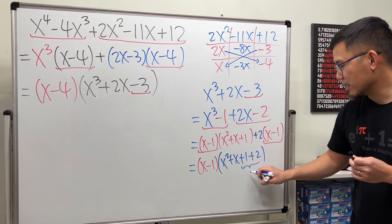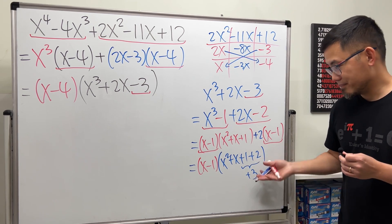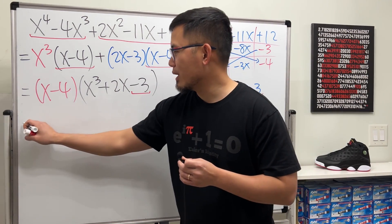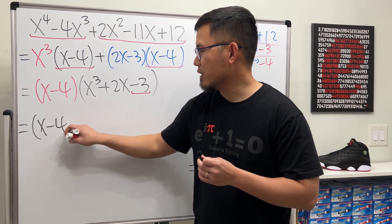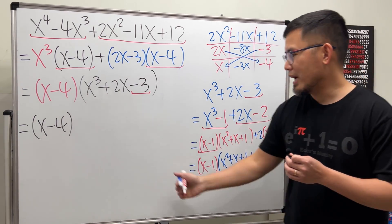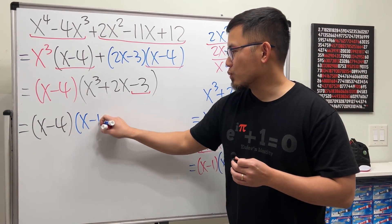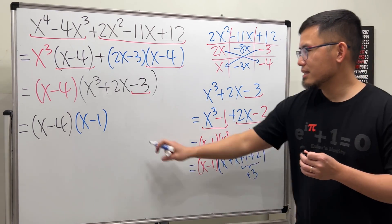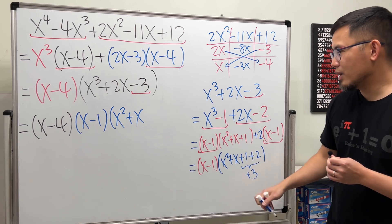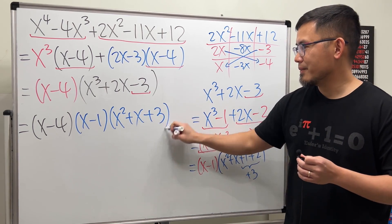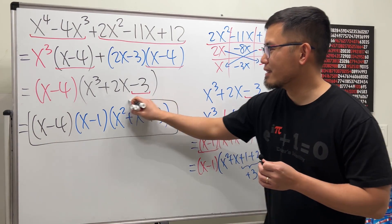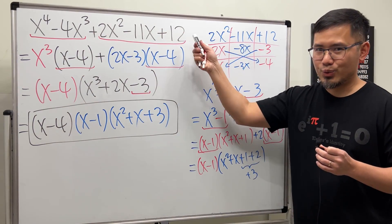So of course this right here is plus 3. I'll come back here and write this down: we have x minus 4 here, and then x minus 1 times x squared plus x — combine 1 and 2 together, we get plus 3. So this right here is how we can factor a five-term polynomial by grouping.